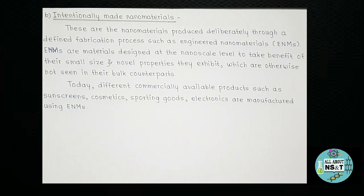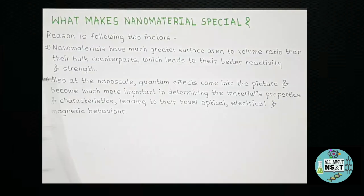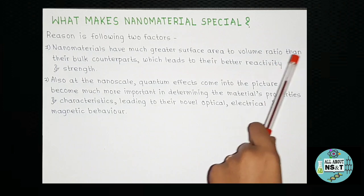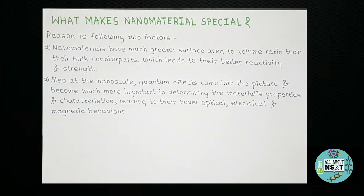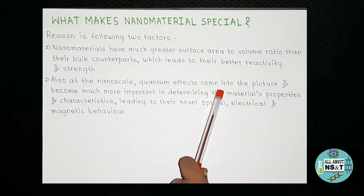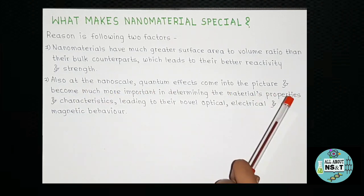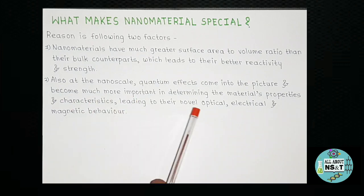Now you may be wondering how nanomaterials are different from bulk materials and what makes them so special. The reason is two factors. Firstly, nanomaterials have much greater surface area to volume ratio than their bulk counterparts, which leads to better reactivity and strength. Secondly, at the nanoscale, quantum effects come into the picture and become much more important in determining the material's properties and characteristics, leading to novel optical, electrical, and magnetic behavior.